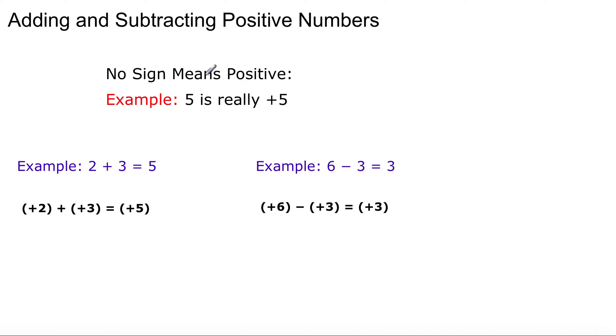Adding and subtracting positive numbers. No sign means it's positive. So, therefore, 5 is really plus 5. The only time that you're going to have an integer in front of the number is if it's negative. But if you see a positive number, it won't have any sign in front of it. It will be written like that.